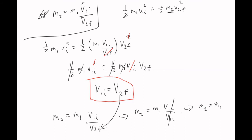So the first example gave us M2 and told us ball one stopped — we solved for V2_final. This second setup didn't give us M2 or V2_final — and we found V2_final = V1_initial and M2 = M1. We've now seen one example using only conservation of momentum for an elastic collision, and one using both conservation of momentum and conservation of energy. You only need to invoke conservation of energy when you end up with two unknowns.